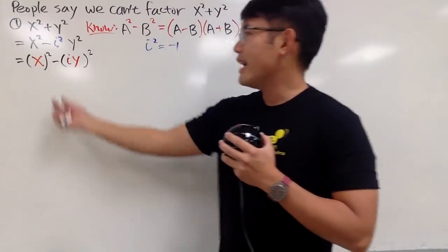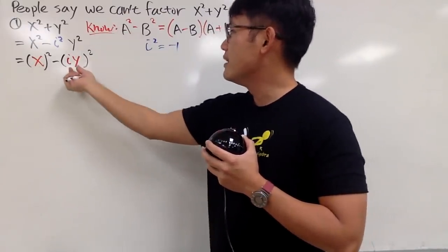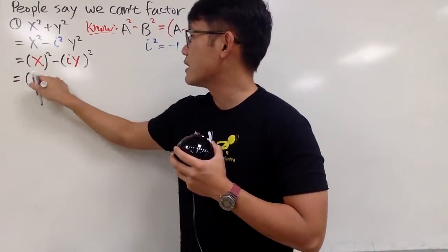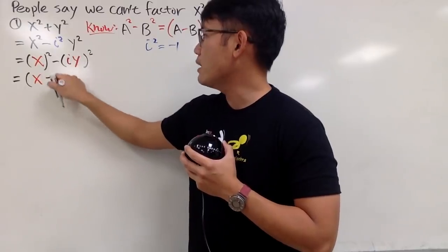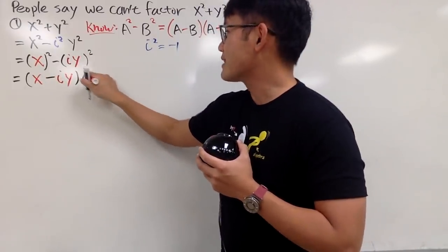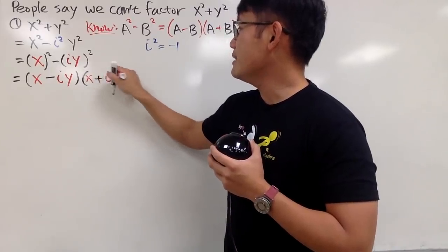Very nice. And now, this is our a, and this is our b, and we can just use the formula. And to factor this, the first factor is just x minus iy. And then the second one is x plus iy. And that's it.